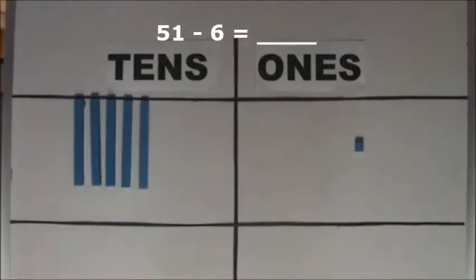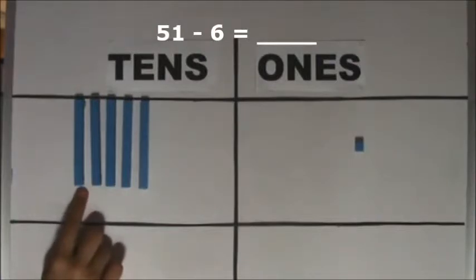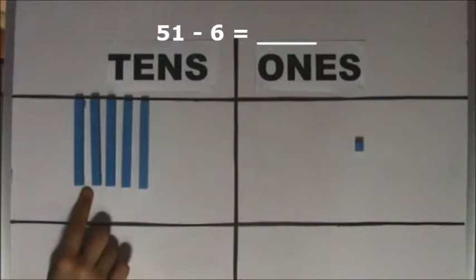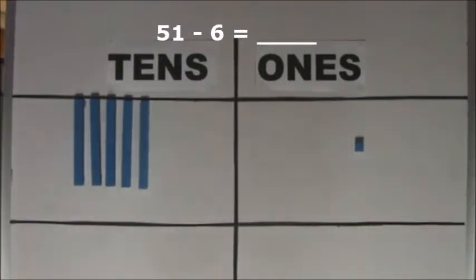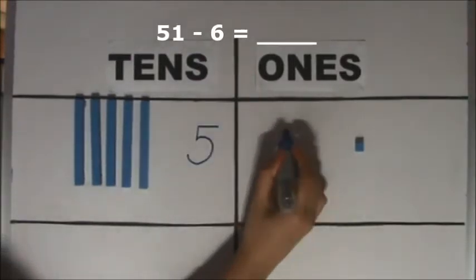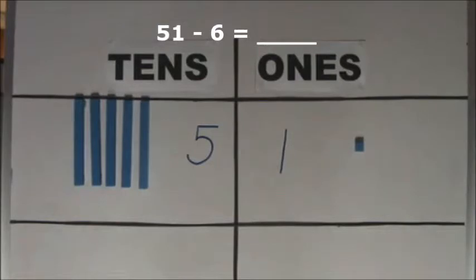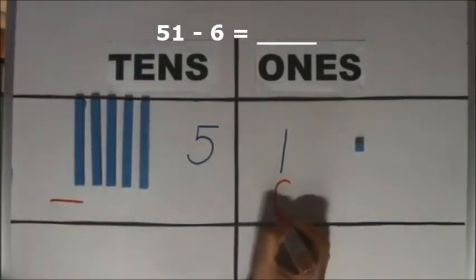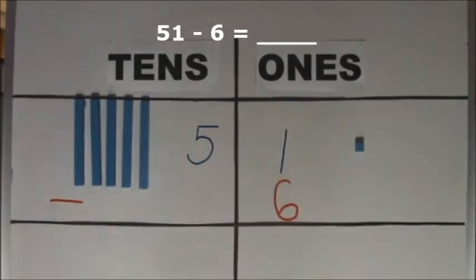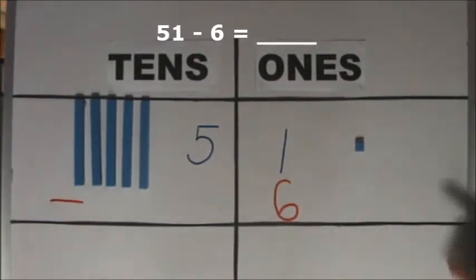Let's subtract 6 from 51 using a place value chart. This is how you write the subtraction equation: 51 minus 6. There are 51 cubes. 51 is 5 tens and 1 one. Let's take away 6 ones. Are there enough ones to take away 6 ones? There is only 1 one.